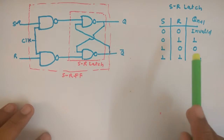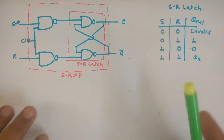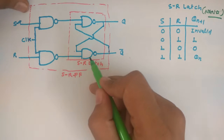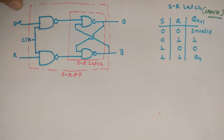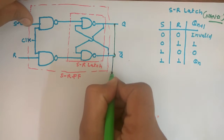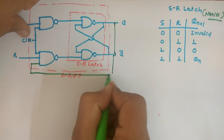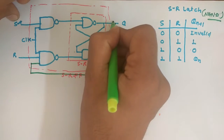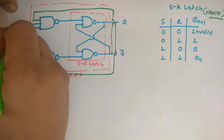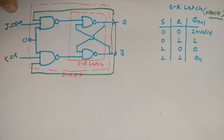We have seen this is the table for SR latch using NAND gate, because we are implementing everything using NAND gate — you can implement using NOR gate also. Now we have to see how the JK flip-flop is going to work. I have taken one terminal from here and connected it here, and one terminal from here and connected here. So this becomes JK flip-flop where S is equal to J and R is equal to K.